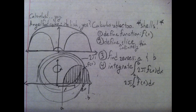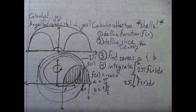It turns out that the function negative cosine x models our angel food cake pretty well. If we call f(x) negative cosine x, the zeros turn out to be π over 2 and 3π over 2.